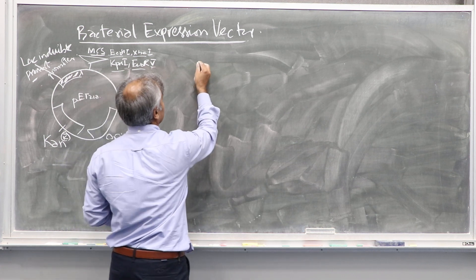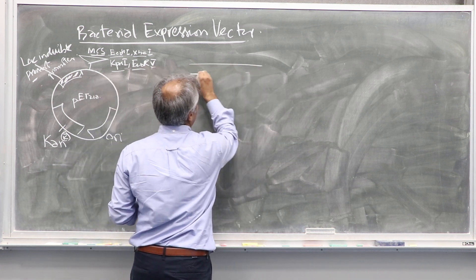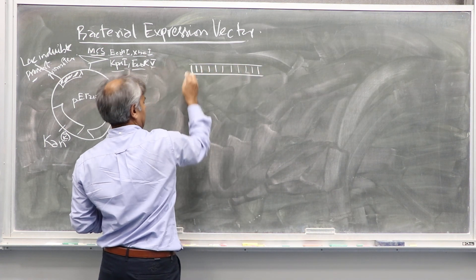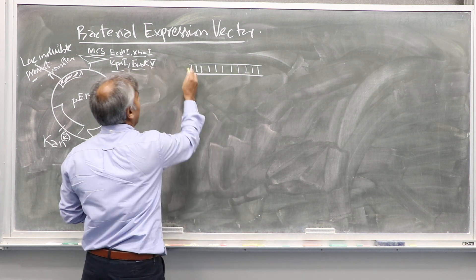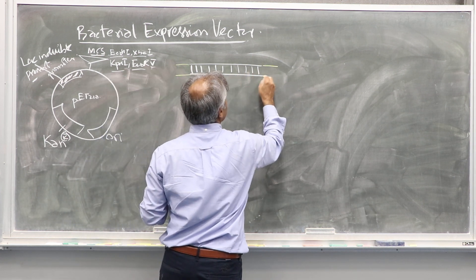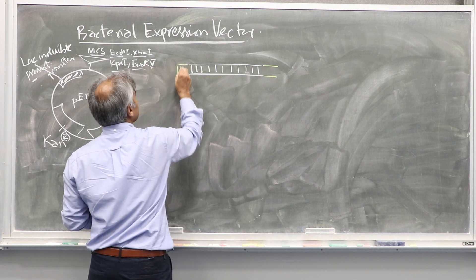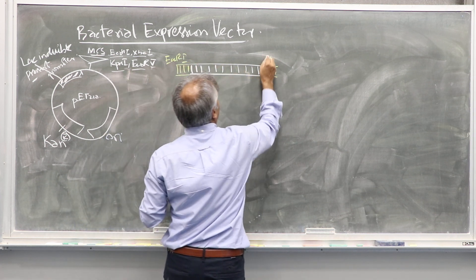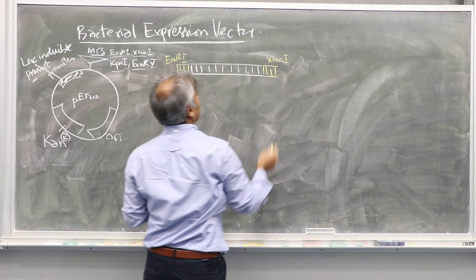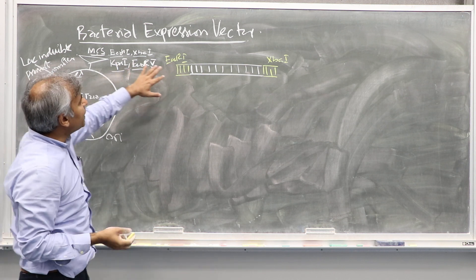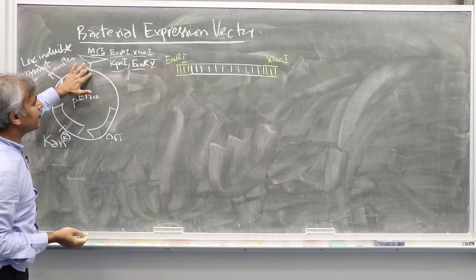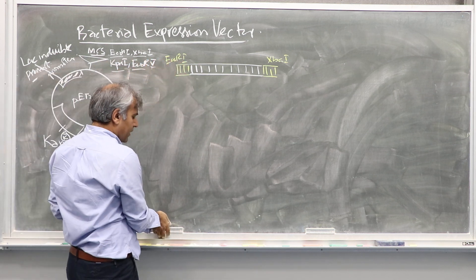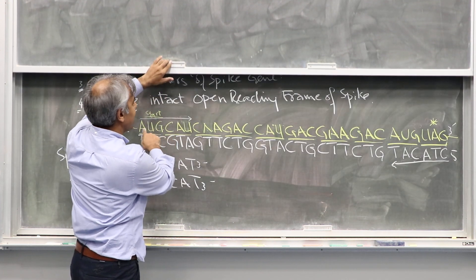So your cloning strategy should ensure that you have PCR amplification of the spike gene. Let's say we used and we will still use the same one which we previously used - let's say we used EcoRI and XbaI. If we use these to ligate them here, you know that ligation keeps our open reading frame of the spike gene fully intact.